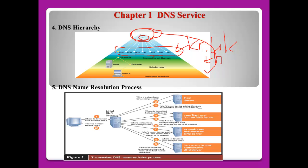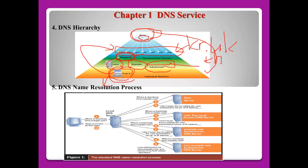Below the first level is the second level domain — for example, Microsoft or Linux. These are exact domain names, and each has its own subdomains such as www, example, FTP, or mail. Each host represents an individual machine, and normally each host uses the DNS server to find this kind of DNS hierarchy.